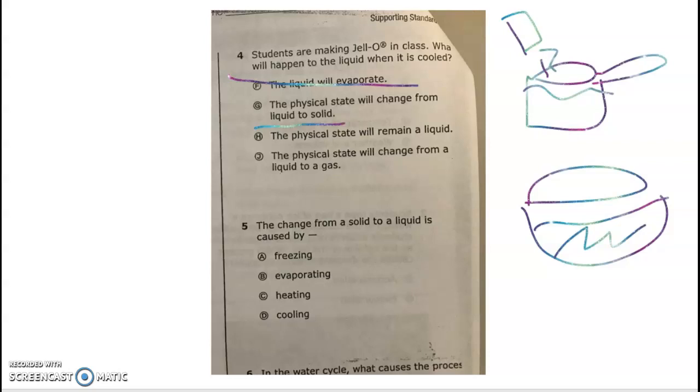The physical state will change from liquid to a solid. When I cool things down, I know that if they were a liquid they go to a solid. The physical state will not remain a liquid, and it won't change from a liquid to a gas—that's applying heat. So G is our correct answer here.